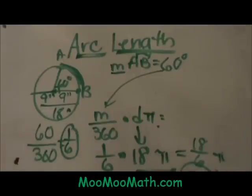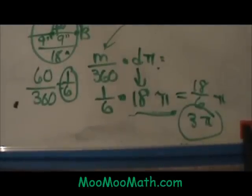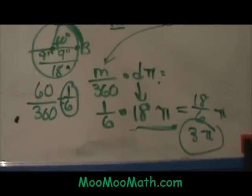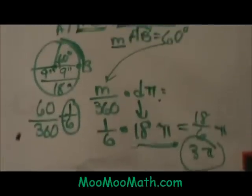That is how you find the arc length of a circle. So since the whole thing is 18π I am taking one-sixth of it which is 3π.